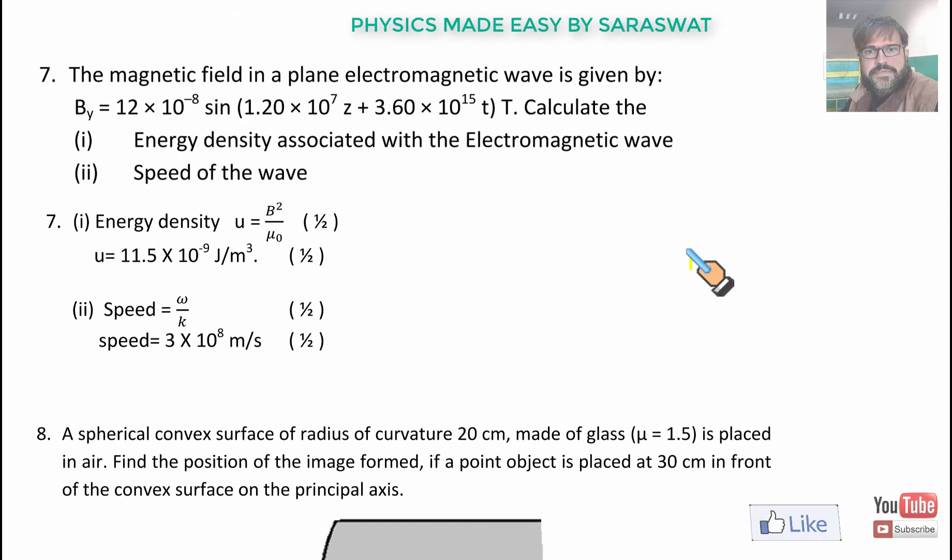Seventh question. The magnetic field in a plane electromagnetic wave is given by Bᵧ = B₀ sin(kz + ωt) Tesla. Calculate the energy density associated with the electromagnetic wave and speed of the wave. Energy density is B²/μ₀, B is given and μ₀ we know. Speed is ω/k, this is ω and this is k.